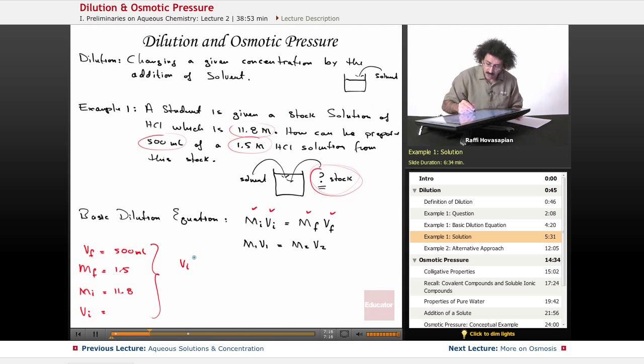We have initial volume times initial molarity, which is 11.8 moles per liter, equal to the final volume, which is 0.500 liters times 1.5 moles per liter. I just switched them around. Here I have M first and V second, here I have V first and M second. Sorry about that, I hope that doesn't confuse you. Now let me solve for my initial volume.